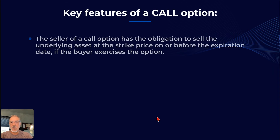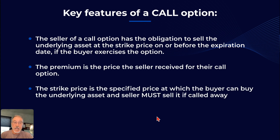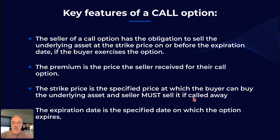The key features of a call option: The seller has the obligation to sell the underlying asset at the strike price on or before the expiration date if the buyer exercises that option. The premium is the price the seller receives and what the buyer paid — the maximum loss I can suffer on that trade. The strike price is specified at which the buyer can purchase and the seller must sell if called away. In the Apple example, it was $100; in the house example, it was $500,000. The expiration date is the specified date on which the option expires.